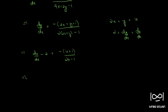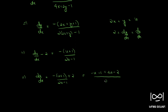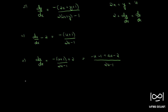Therefore, du/dx = minus (u + 1)/(2u - 1) + 2, which simplifies to (4u - u - 3) over (2u - 1), giving (3u - 3)/(2u - 1).